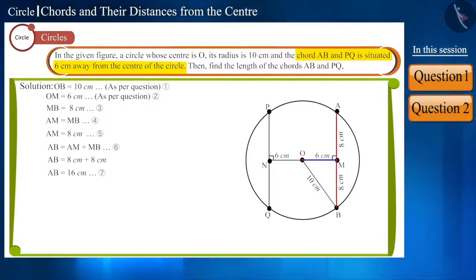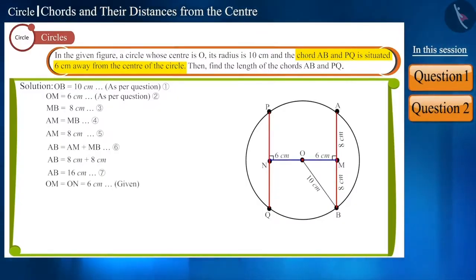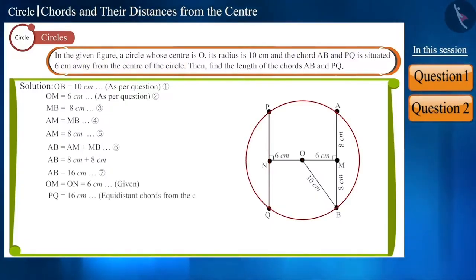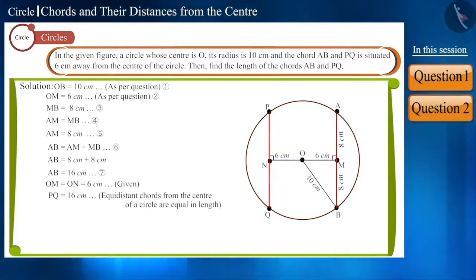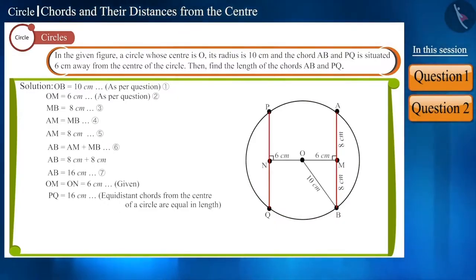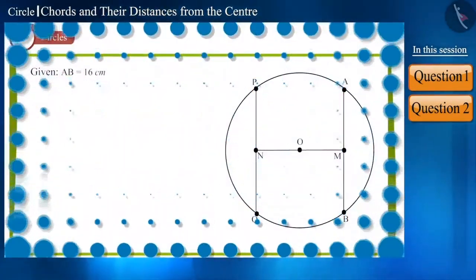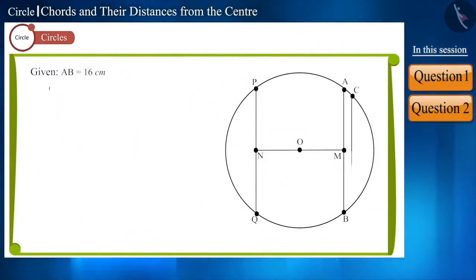Friends, note that chord PQ is also situated at the same distance from the center as chord AB. So the two chords are equidistant from the center, and therefore the length of chord PQ will also be 16 cm, because equidistant chords from the center of a circle are equal in length. In this way, we found the length of both chords AB and PQ.